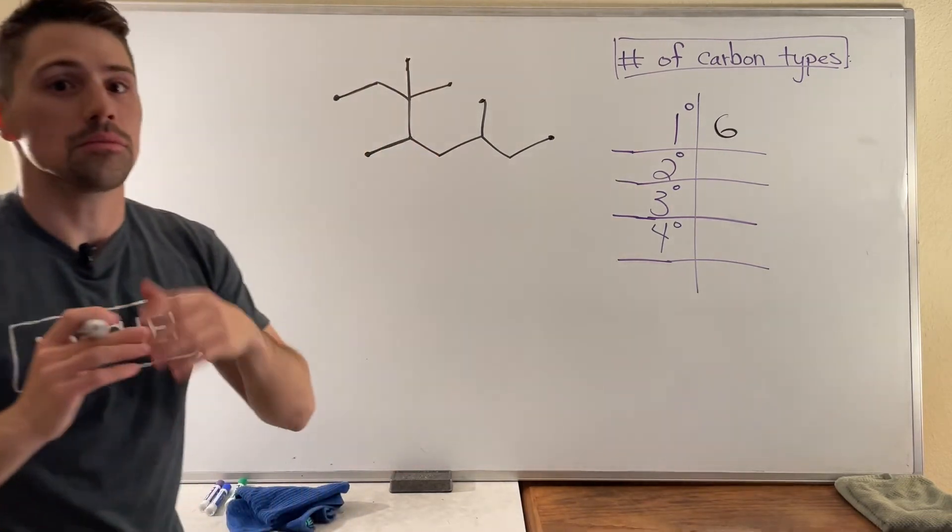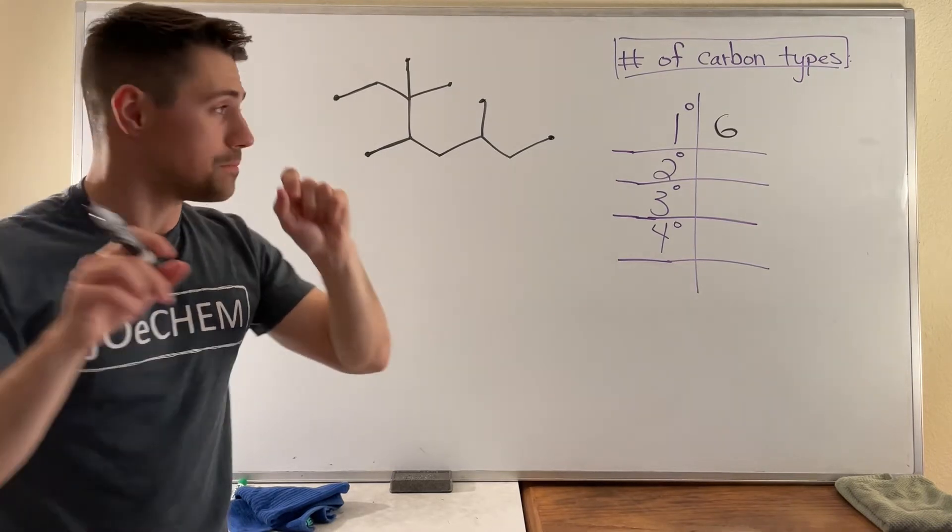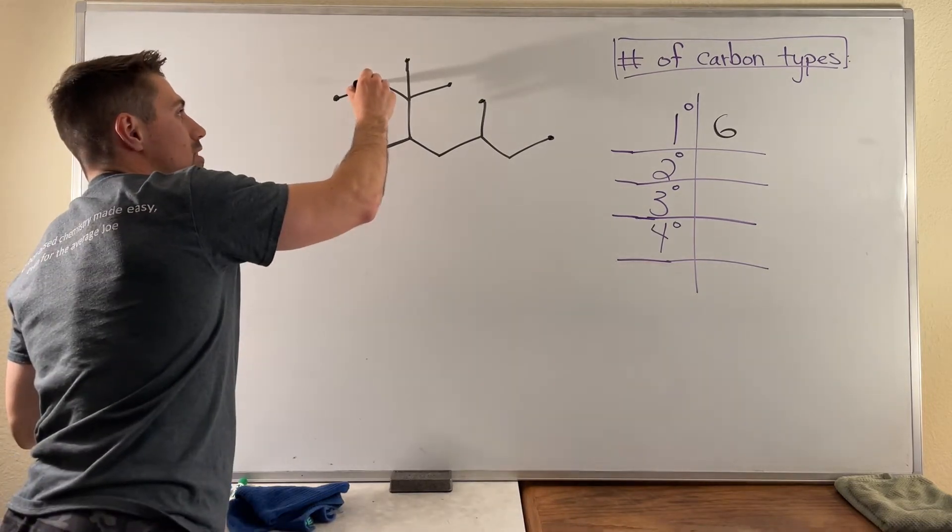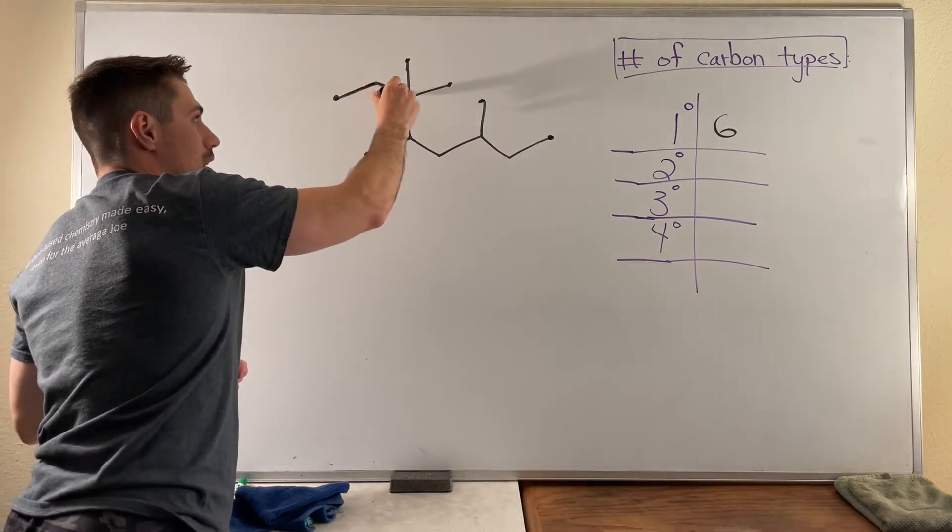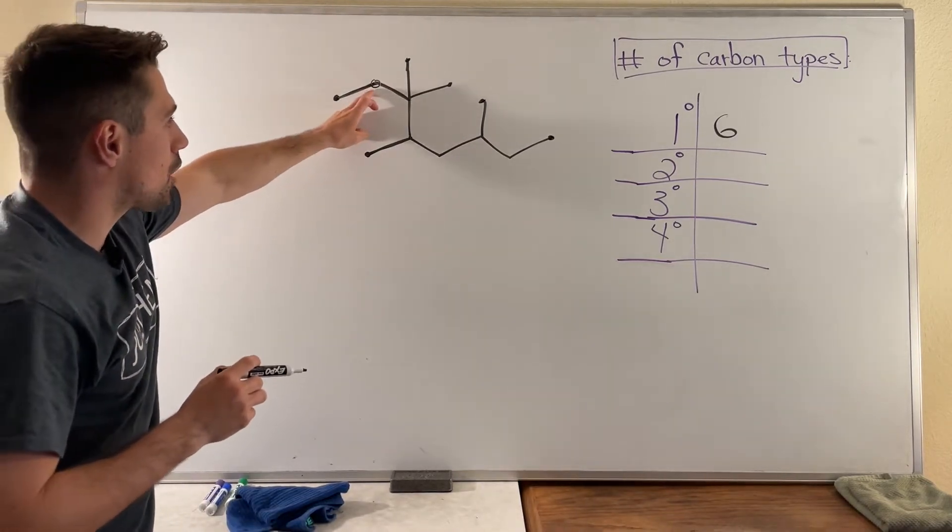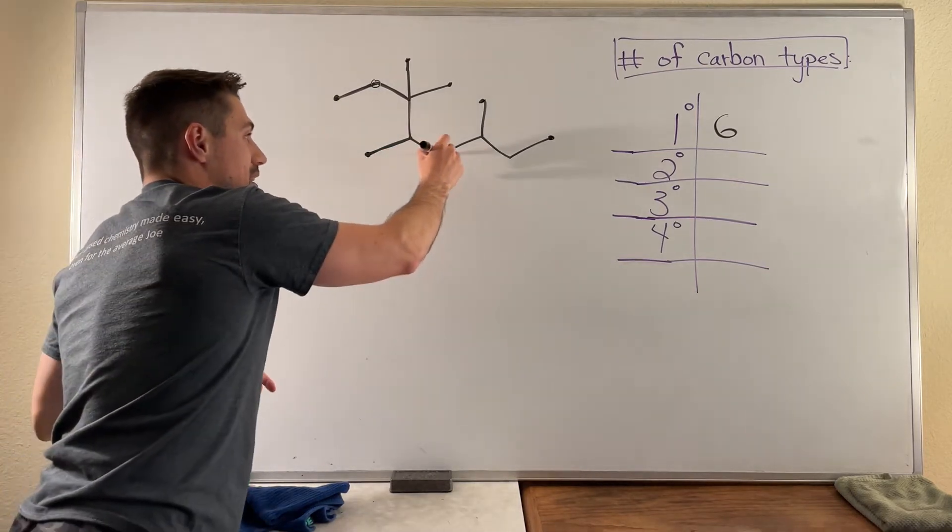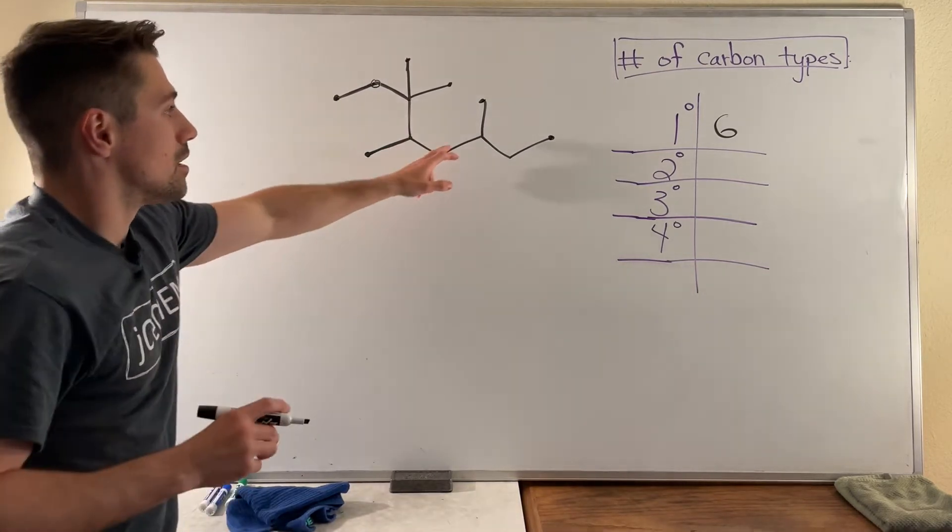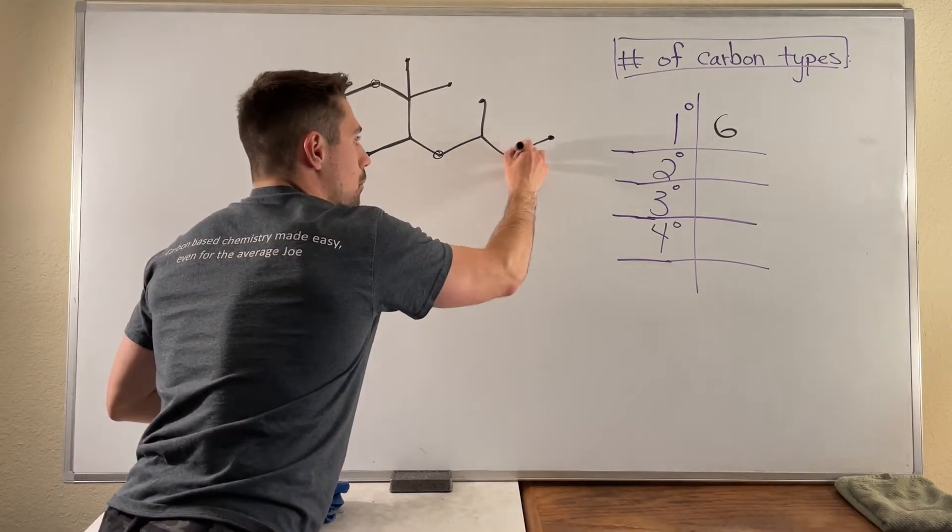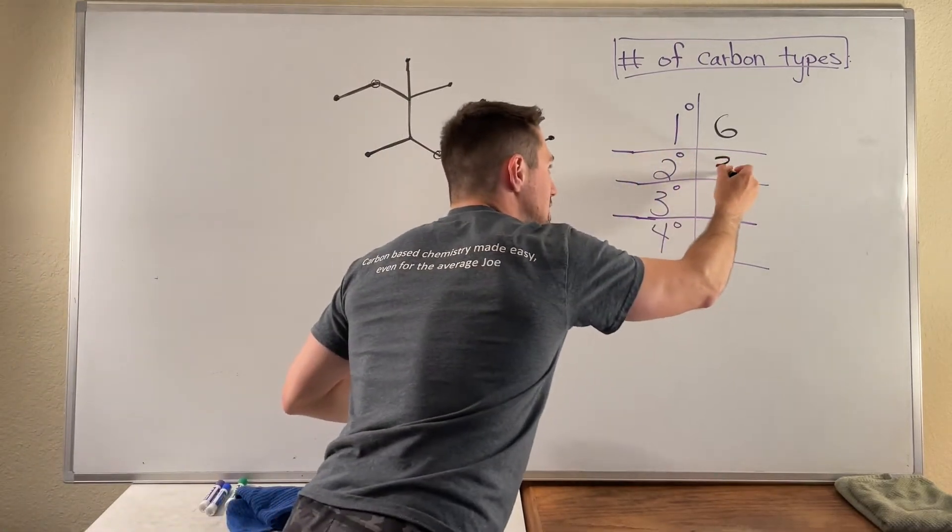If we move on to secondary carbons, remember that means a particular carbon is bonded to two other carbons. So if I look at this carbon right here I can see there's one carbon on one of its sides and another on another side. So I'll put a little circle around that carbon. So that's a secondary carbon, not a secondary carbon, not a secondary carbon, but this is a secondary carbon, not a secondary carbon, but this is also a secondary carbon because one, two. So total that means we have three secondary carbons.